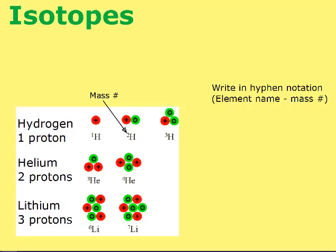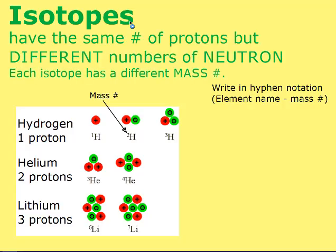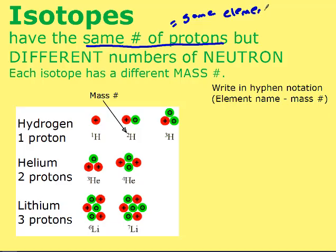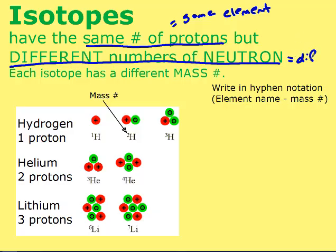An isotope means having the same number of protons — which means it's the same element — but different numbers of neutrons. If they have different numbers of neutrons, they have different masses, so each isotope has a different mass number.